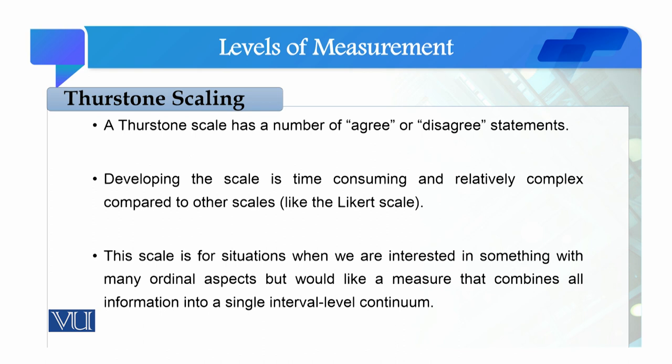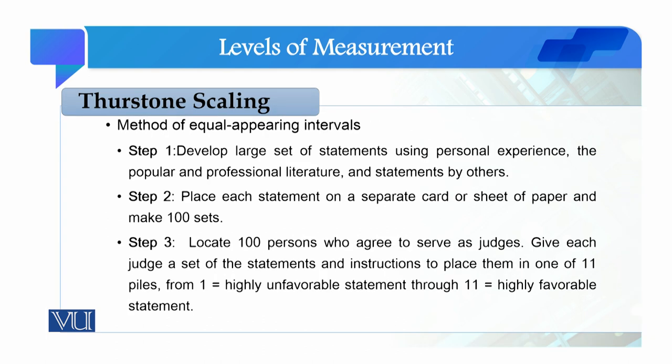This scale is for situations when we are interested in something with many ordinal aspects but would like a measure that combines all information into a single interval level continuum. The basic emphasis is on the variable and its different aspects combined into a single level continuum. We also have to look at the values of the variable. We call this the method of equal appearing intervals.